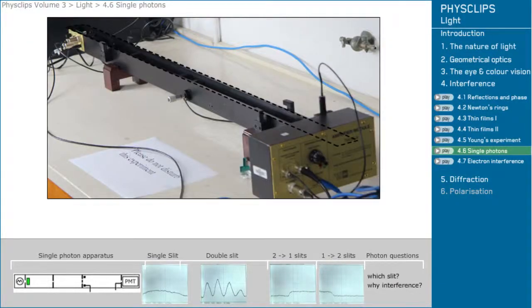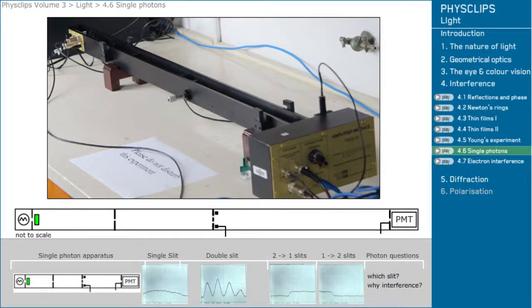In this Young's experiment we can reduce the light intensity so that only one photon is in the apparatus at a time.